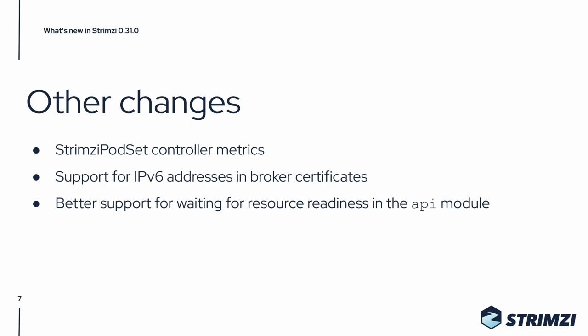This release also has many other smaller changes. The Strimzi PodSet controller now exposes metrics with information about the Strimzi PodSet reconciliation. IPv6 addresses can now be used as the subject alternative names in the broker certificate. And the API module provides predicates to identify when the custom resource is ready or not.